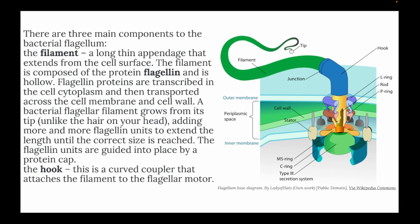The filament is composed of flagellin and is hollow. The process of flagella formation is interesting: they build it from the inside out. Flagellin is transported through the hollow tube and placed at the tip, which is how the filament lengthens. This is unlike hair on your head, which grows at its base — bacterial flagella grow at the tip. There is also a hook, which is solid, and it connects the filament to the basal body.